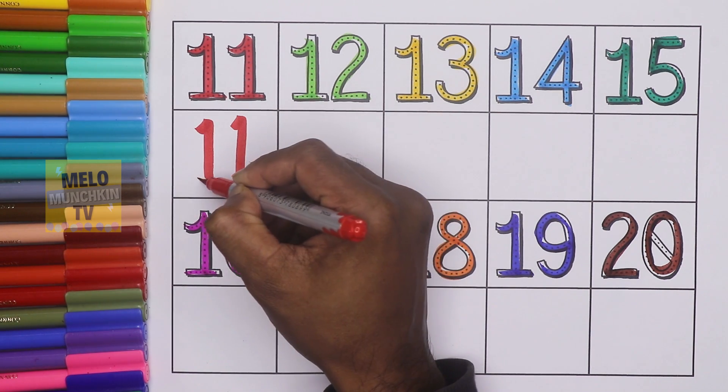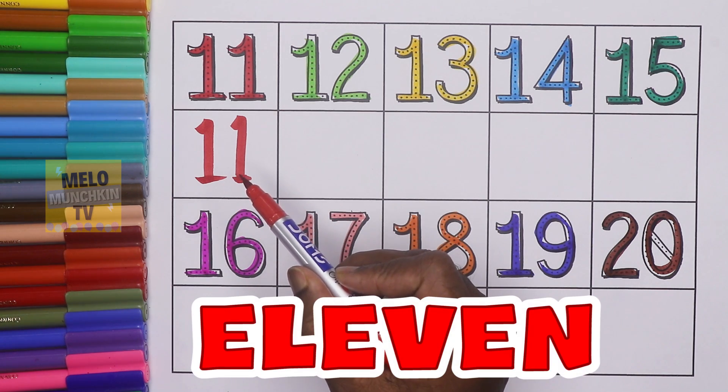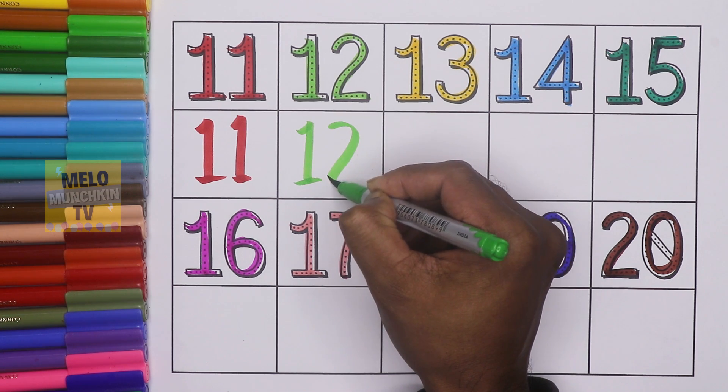Okay, so let's repeat once again. This is 11, 1-1, 11, and the spelling is E-L-E-V-E-N, 11.